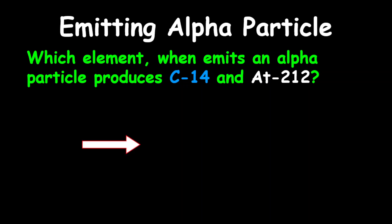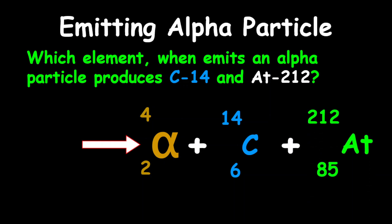Therefore, to represent this reaction, we're going to represent our alpha particle, carbon-14, and carbon has a proton number of 6, astatine has a proton number of 85.